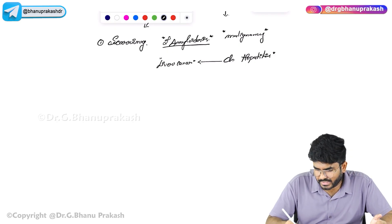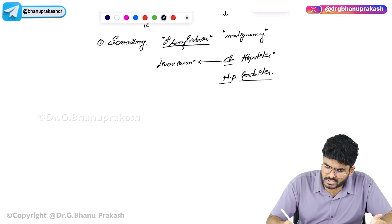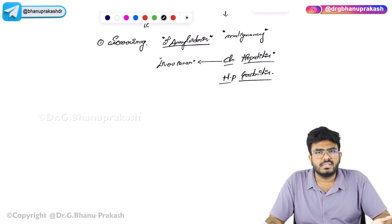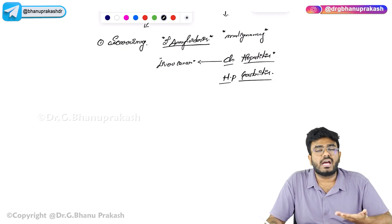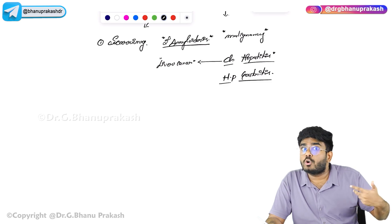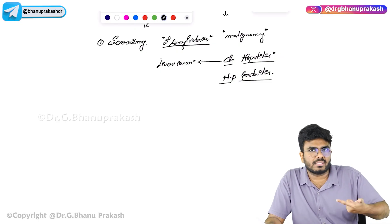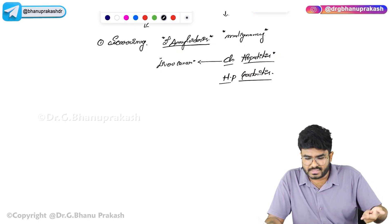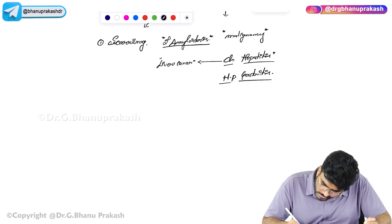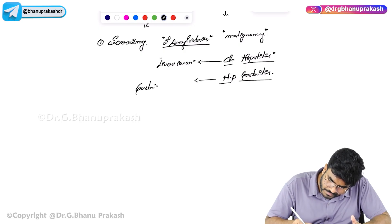Another example is H. pylori gastritis. There are two causes of chronic gastritis: H. pylori gastritis and autoimmune gastritis. With H. pylori gastritis specifically, there is a risk of MALT lymphoma and gastric adenocarcinoma. So chronic inflammatory conditions can lead to malignancy. Chronic H. pylori gastritis can lead to gastric adenocarcinoma.